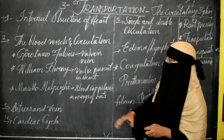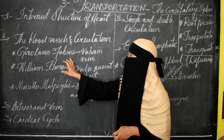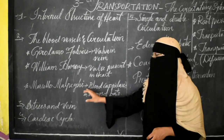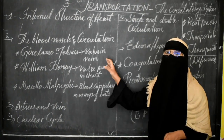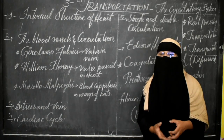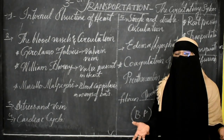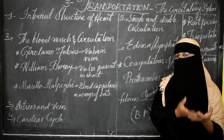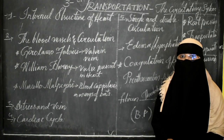Regarding blood vessels and circulation: Fabricius studied the valve within the veins, William Harvey studied the valve within the heart, and Marcello Malpighi studied blood capillaries within the wings of the bat. These studies explain the complete circulation — deoxygenated blood from all parts of the body is collected by inferior and superior vena cava, enters the heart, goes to the lungs, comes back to the heart, and is supplied to all parts of the body at the tissue level.